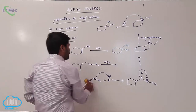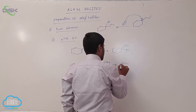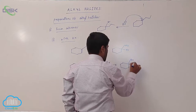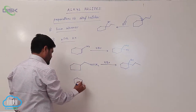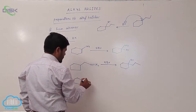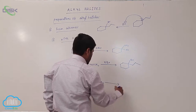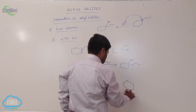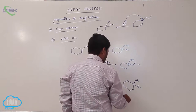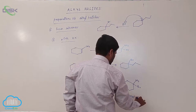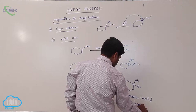Therefore the final product is one Br, one methyl cyclohexane — like this. Suppose if you are taking another alkene reacting with HBr, the final product via ring expansion and carbocation stability is 1-bromo-1-methylcyclohexane.